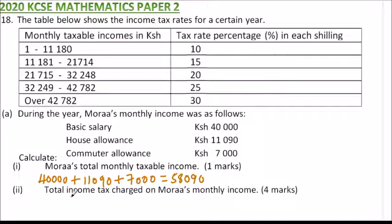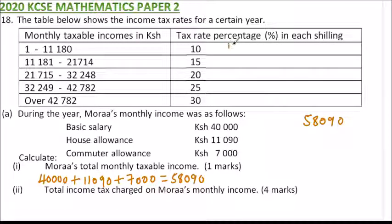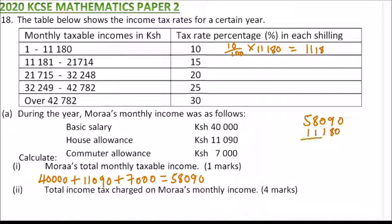Part A(ii): Calculate the total income tax charged on Moran's monthly income. The taxable income is 58,090 shillings. For the first bracket, we use 11,180 shillings at 10%, so: 10/100 × 11,180 = 1,118 shillings. We then subtract 11,180 from the taxable income balance.